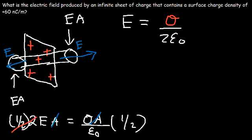So this is the equation you can use to calculate the electric field produced by an infinite sheet of charge. Notice that because the sheet is so large, the electric field is independent of the distance between a point and the sheet of charge. All it depends on is the surface charge density.